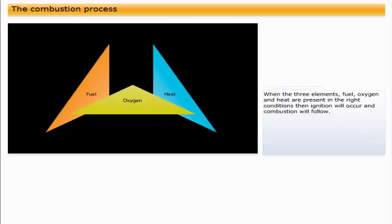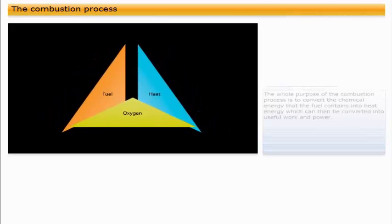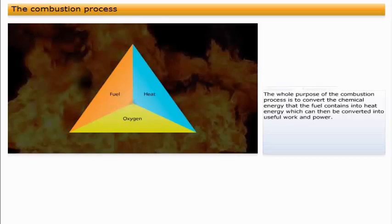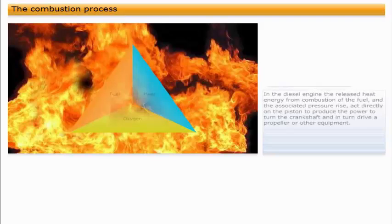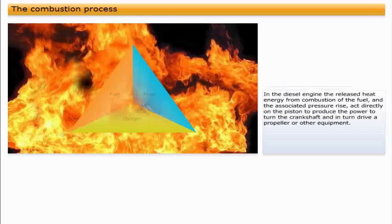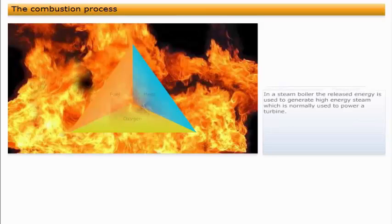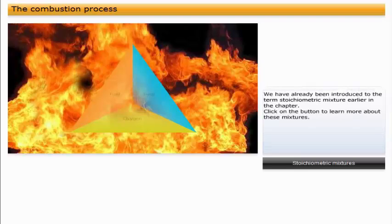When the three elements—fuel, oxygen, and heat—are present in the right conditions, then ignition will occur and combustion will follow. The whole purpose of the combustion process is to convert the chemical energy that the fuel contains into heat energy, which can then be converted into useful work and power. In the diesel engine, the released heat energy from combustion of the fuel and the associated pressure rise act directly on the piston to produce the power to turn the crankshaft and in turn drive a propeller or other equipment. In a steam boiler, the released energy is used to generate high energy steam, which is normally used to power a turbine.